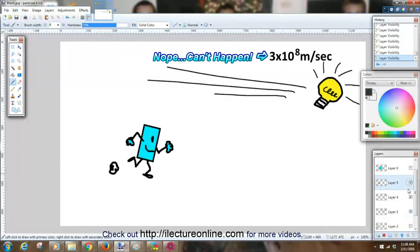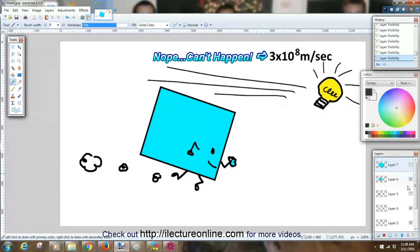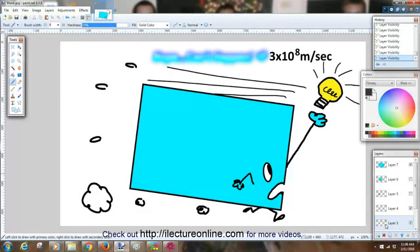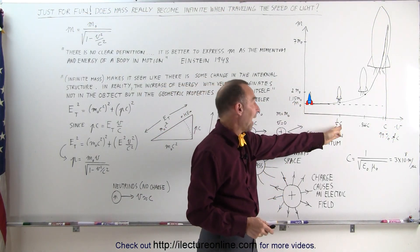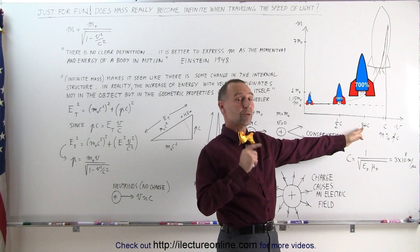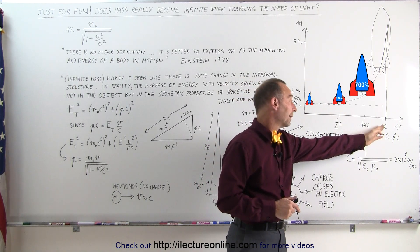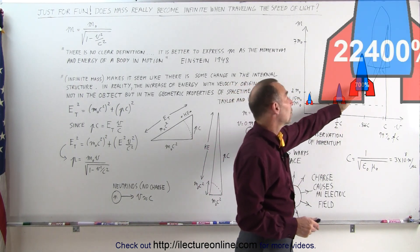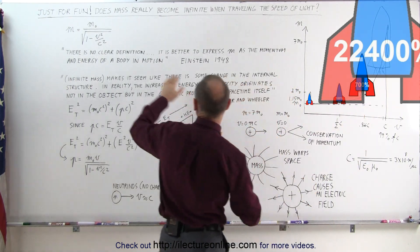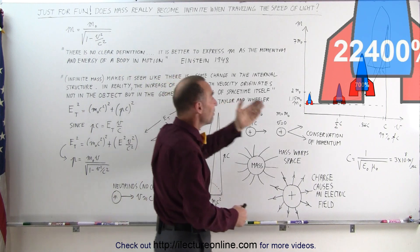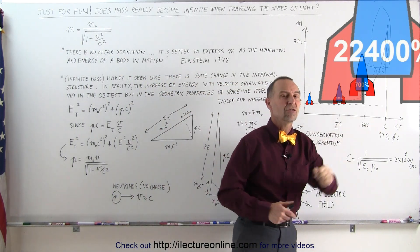The reason for that is because as an object goes faster and faster, it appears as if the mass gets bigger and bigger. Here on this graph it illustrates that as the object reaches half the speed of light or 86.6% of the speed of light or 99% of the speed of light, the mass would continue to increase. Eventually according to this equation, the equation that we have up here, the mass would become infinite as the object reaches the speed of light.